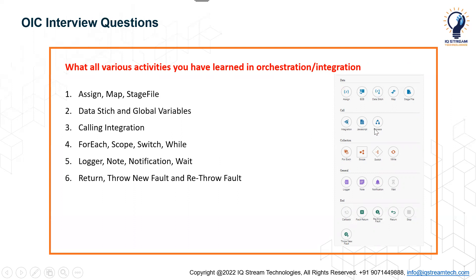Sometimes they may ask you to list the activities or what are the actions. You may not have experience with all the activities, so based on what you've learned and what you know, it's better to mention only what you've worked with. For example, worked with assign, map, and stage file activities, which are related to data activities. If you've worked on data structure and global variables, you can mention those — but if not, don't mention them.